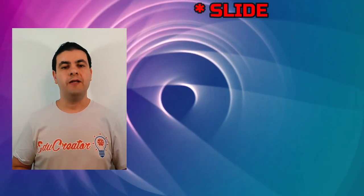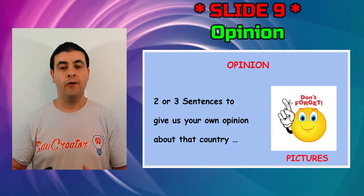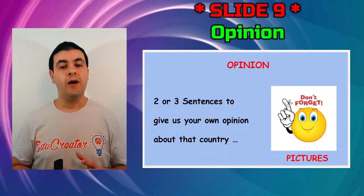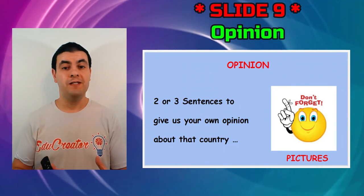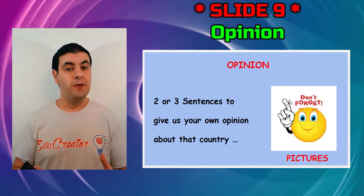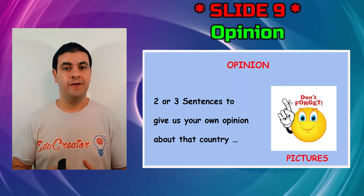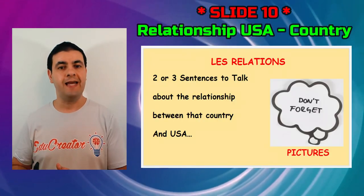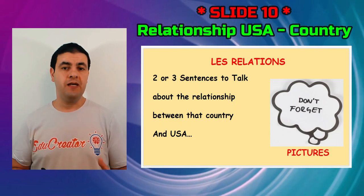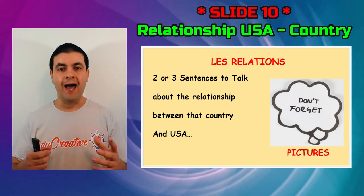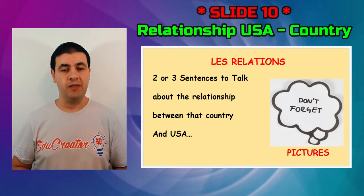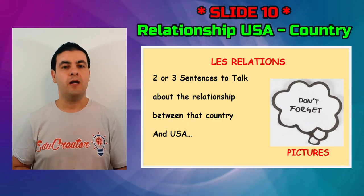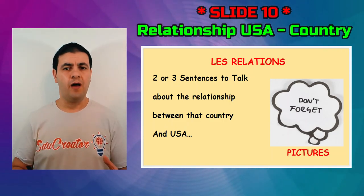Slide nine is your personal opinion about the country. Write something like: 'I like this country because I really want to visit it; I like their language, their people, their food, and their famous places.' For the last slide, slide ten, talk about the relationship between the United States and that country — economic or governmental. You can put a picture of the two flags or the two presidents shaking hands, and write a couple of sentences.